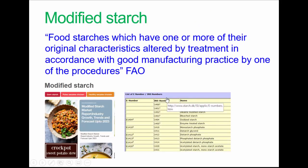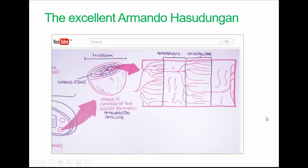To wrap up, a note on modified starch: starches whose original characteristics have been altered by treatment — in accordance with good manufacturing practice — by one of a range of procedures. That's a definition from the Food and Agriculture Organization. Many modified starches have an E number, such as E1404, which would be displayed on product packaging — very important in food technology applications. Finally, there's a recommended video by Armando Hasegawa on starch which reviews the structure excellently. Thanks for listening.